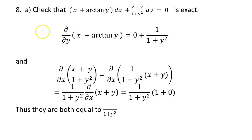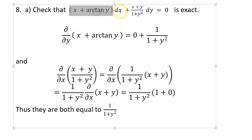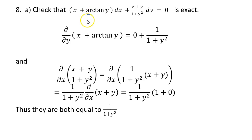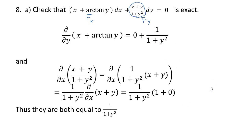Number eight: check that this differential equation is exact. The term in front of dx should be thought of as some function's partial derivative with respect to x, and the term in front of dy as its partial derivative with respect to y. Since second partials commute, if ∂M/∂y = ∂N/∂x, the equation is exact — a single function generates both terms.